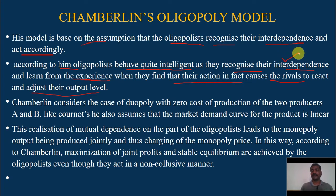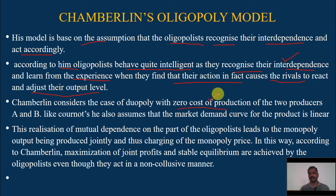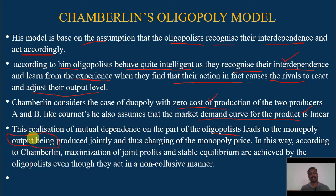They recognize their interdependence, which is quite different from the assumptions of the Cournot, Bertrand, and Edgeworth models. Chamberlain considers the case of duopoly with zero cost of production and two producers, A and B. Like Cournot, he also assumes that the market demand curve for the product is linear. This realization of mutual dependence on the part of oligopolists leads to monopoly output being produced.